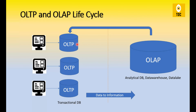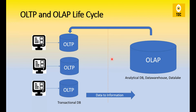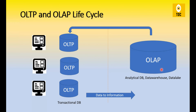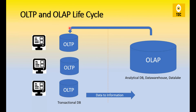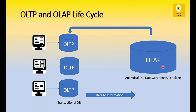OLAP gets data from all these OLTP systems into its location. As you can see, the frequency of these arrows is very low because data flows to OLAP on a schedule — typically daily or weekly runs. Data does not flow to OLAP in real-time — that is the key difference.